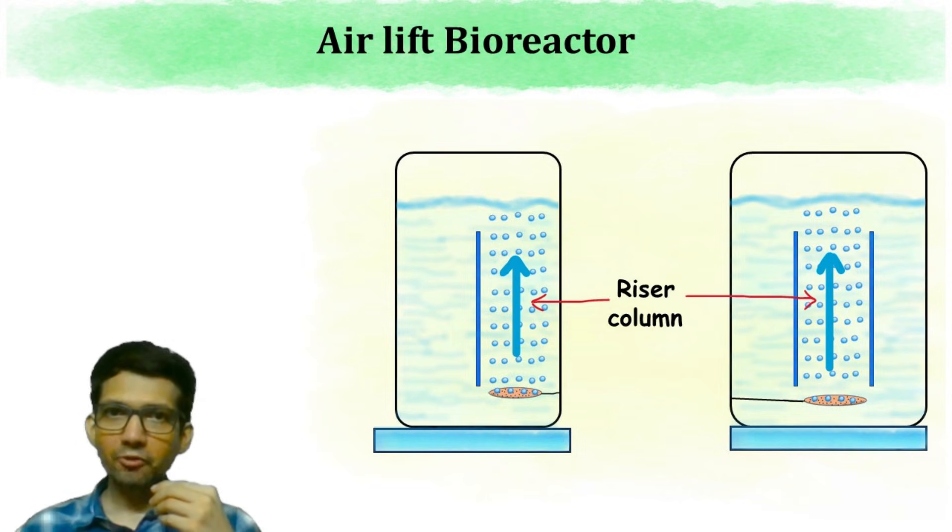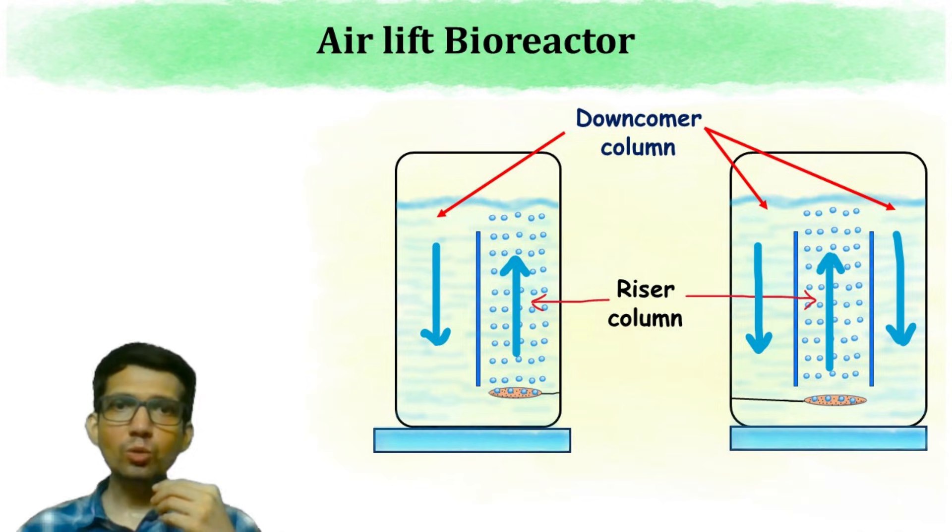The other part of column is the one where the solution is coming down. Hence, this is known as the downcomer column. It's easy to remember. One is the riser and the other one is downcomer column.